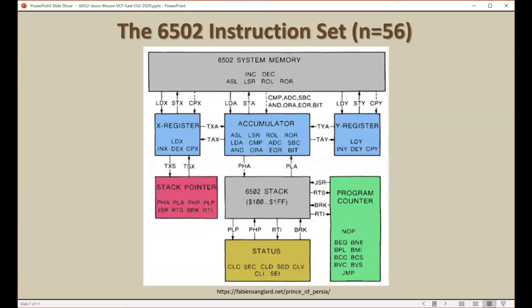This is the 6502 instruction set. There are 56 instructions that we can use to tell the CPU what to do. I like this figure because they're organized according to the various parts of the 6502, and the instructions are represented as assembly language mnemonics — three-letter mnemonics that